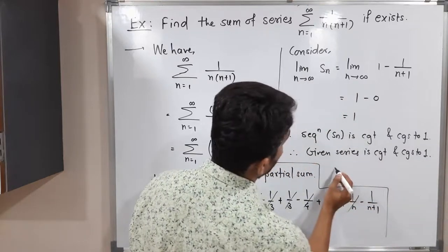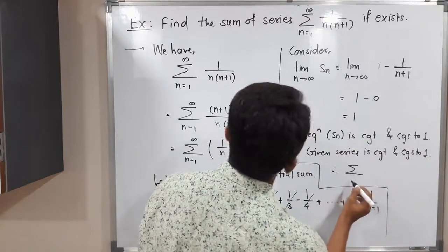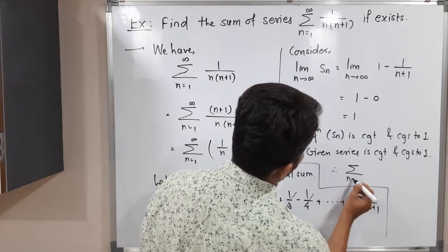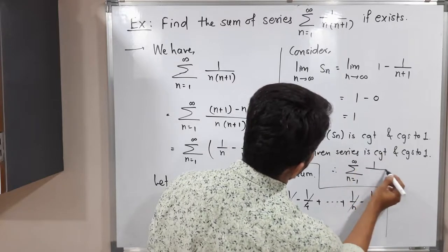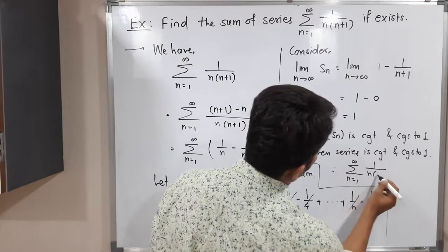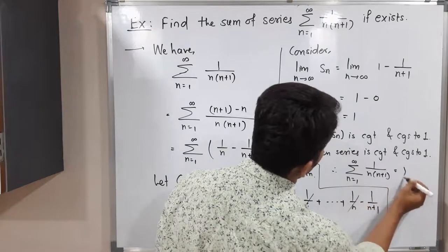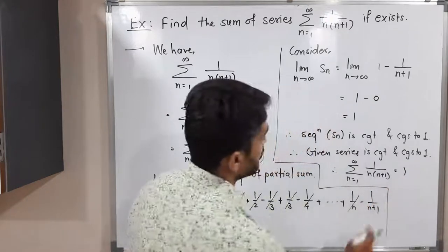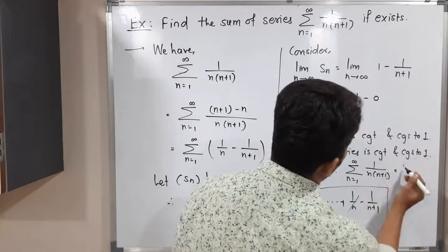We can write the final result as: summation n running from 1 to infinity of 1 upon n(n+1) is convergent and converges to 1. Its value is 1. This is the final answer.